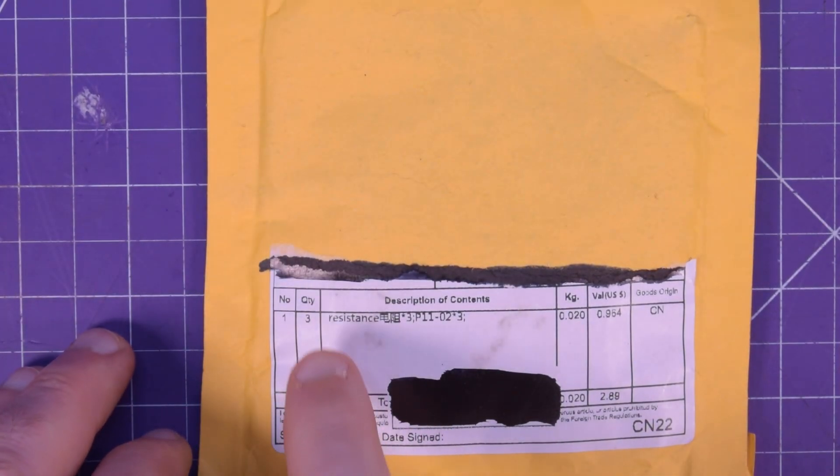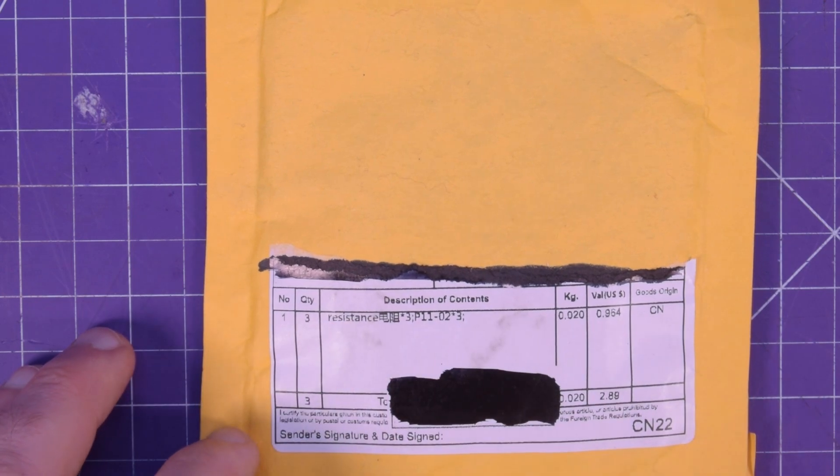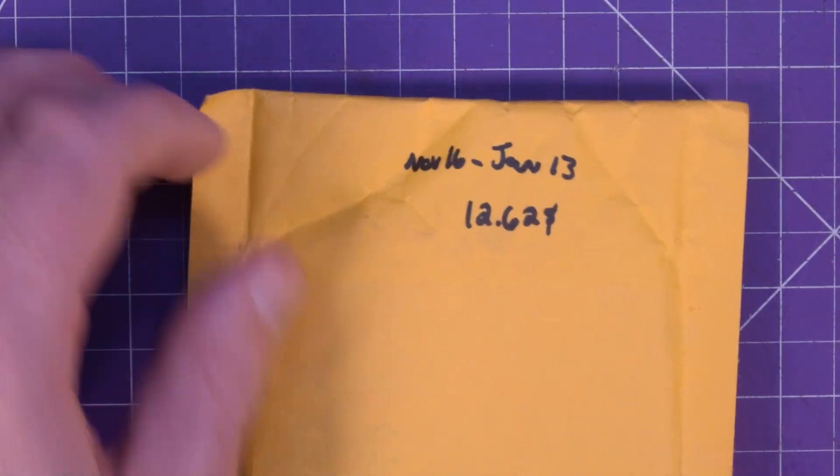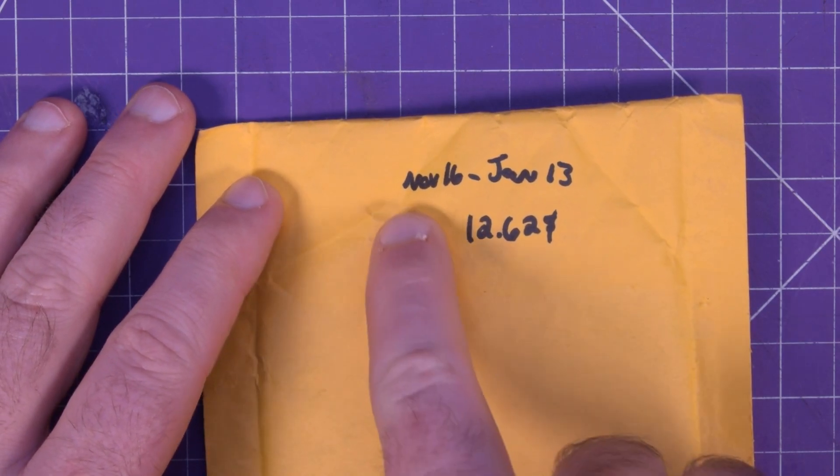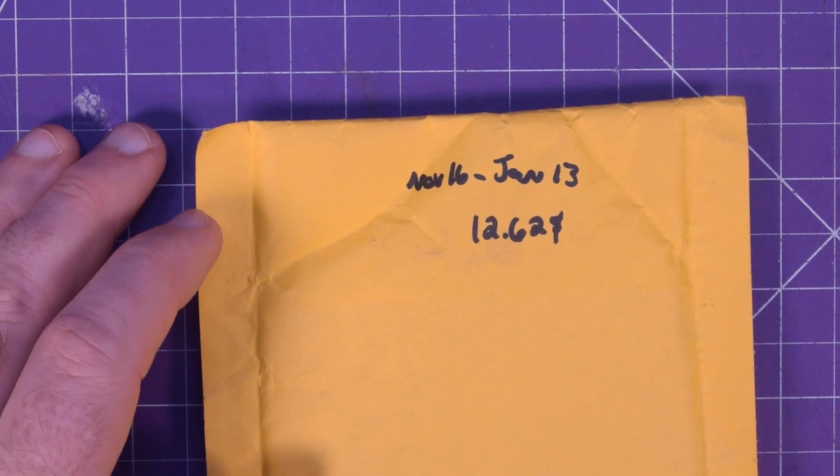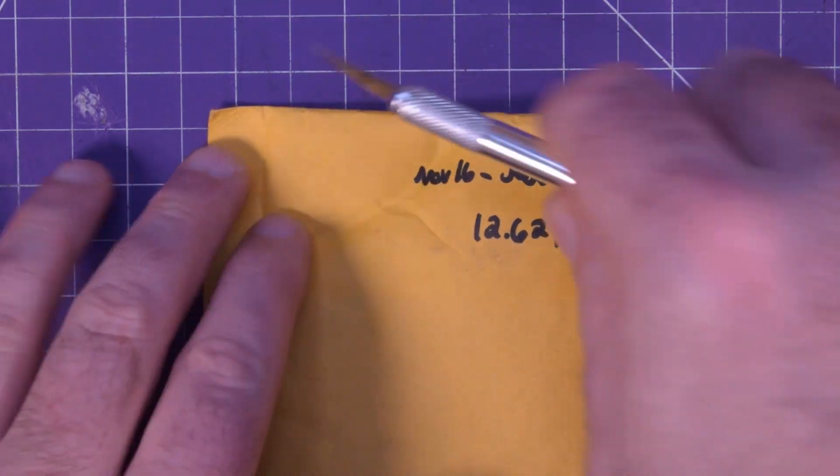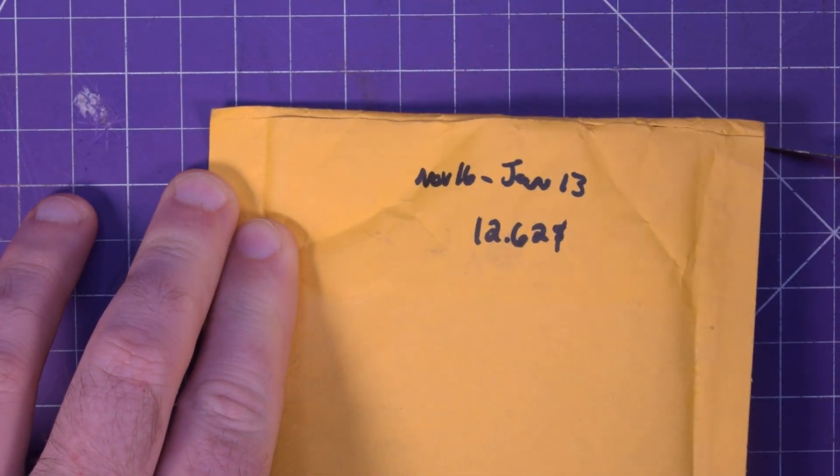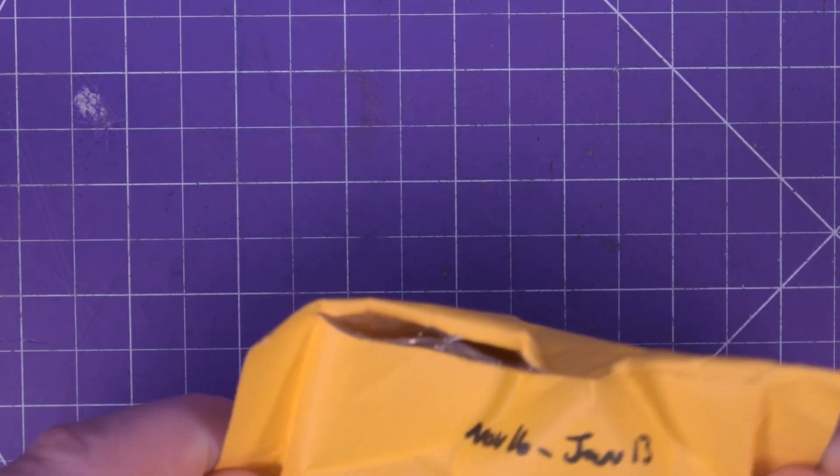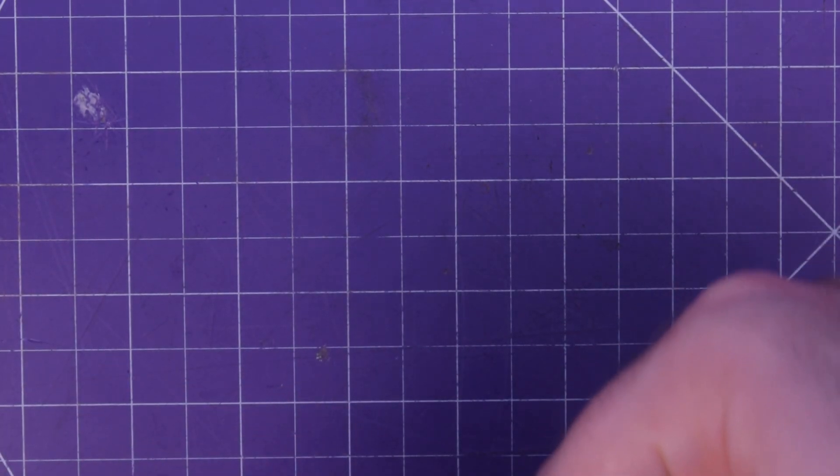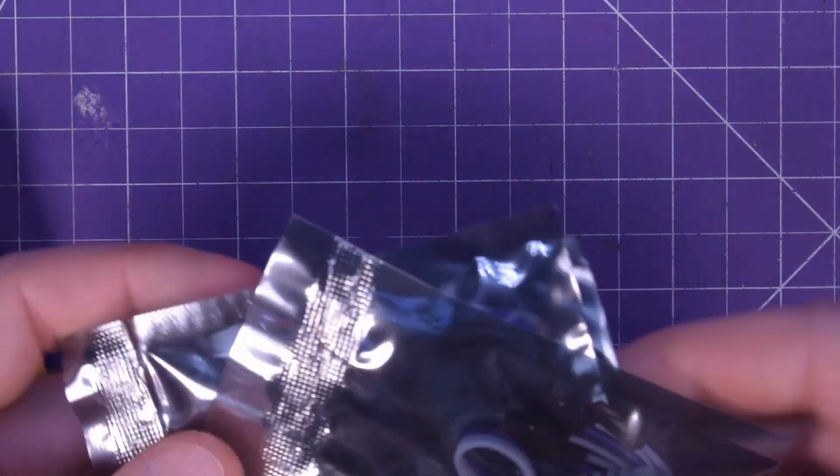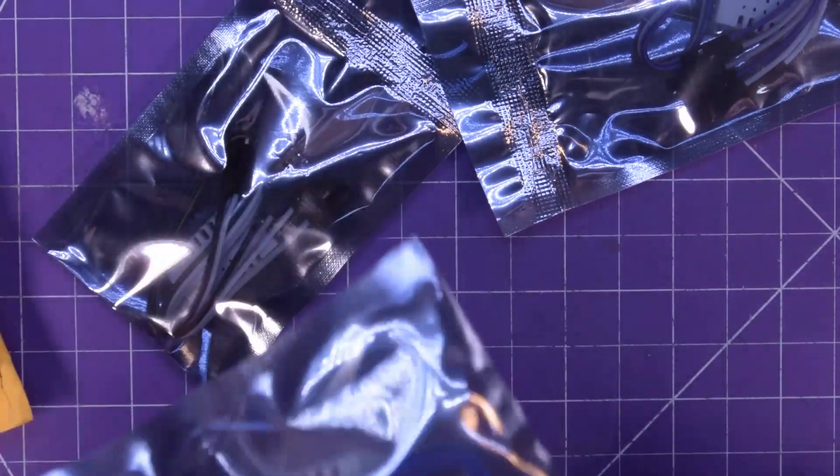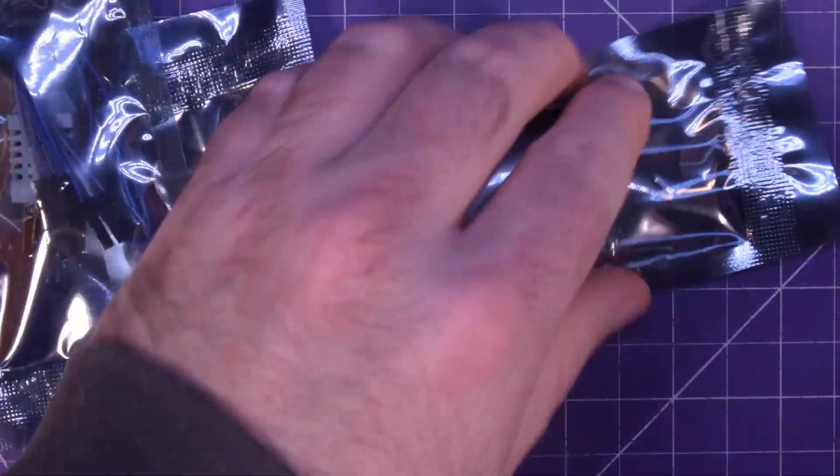Next one up is this one here. It actually has some information on it. Resistance times three. I think I know what this is. Since it wasn't that long ago. November 16th to January 13th. $12.62. Paid a lot of freaking money for this. All the things that if I would have gotten on Amazon, I could have returned. But instead, I got them on AliExpress and then promptly lost my job after.